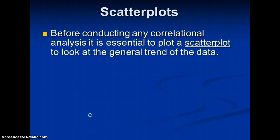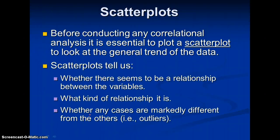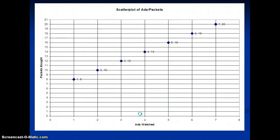Before conducting any correlational analysis, it is essential to plot a scatter plot to look at the general trend of the data. This helps you see if the data is parametric and helps you visualize the linearity of the data, since we need linear data for this kind of coefficient. Scatter plots tell us whether there seems to be a relationship between variables, what kind it is, and whether any cases are markedly different — that's our outliers issue.